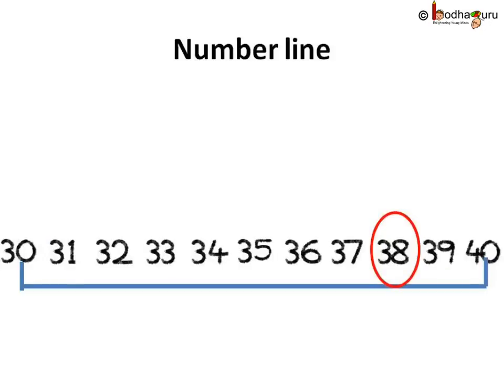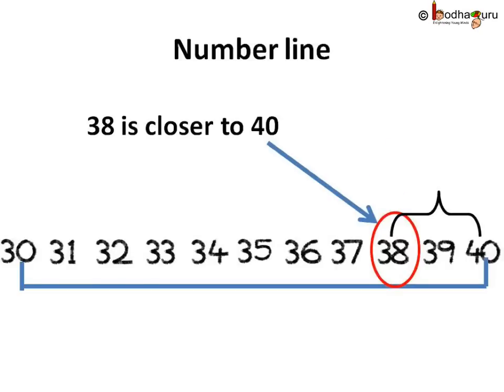Let us use a number line to represent numbers from 30 to 40. See, this is 38. It is between 30 and 40. If you see closely, 38 is closer to 40 as compared to 30. So we round up 38 to 40.